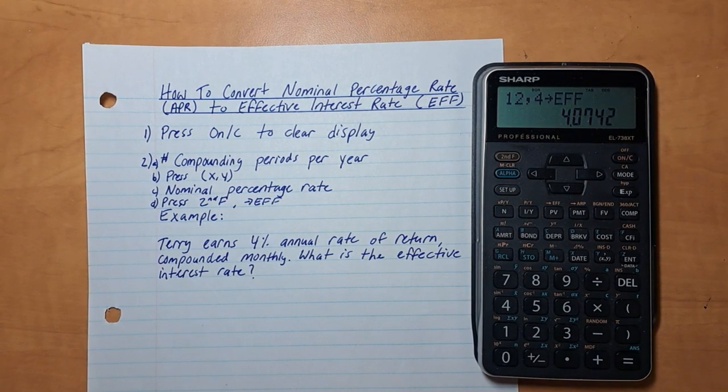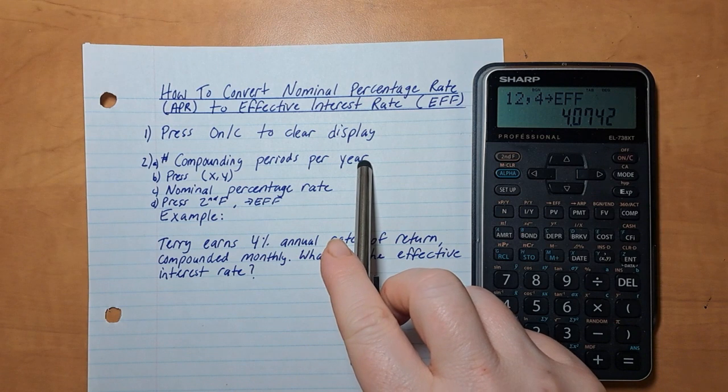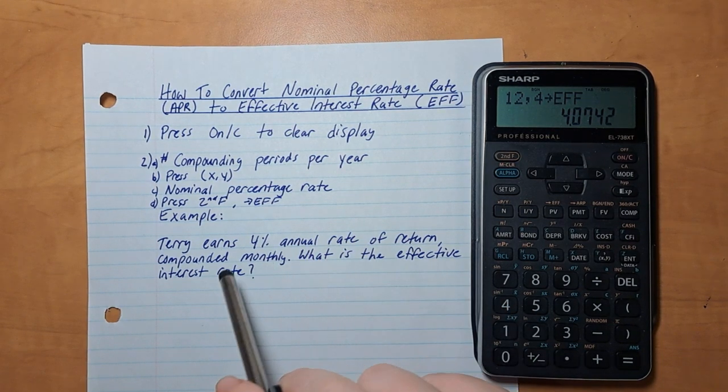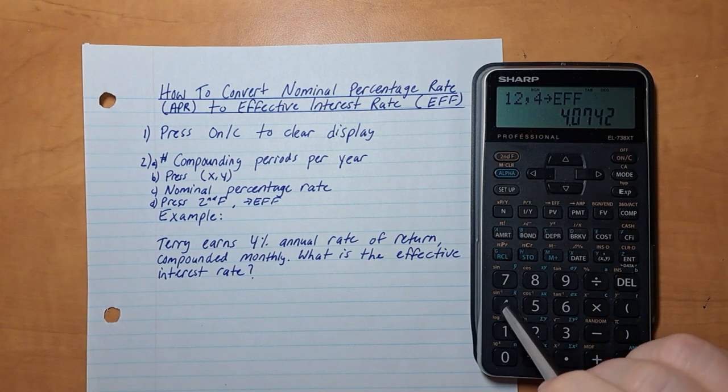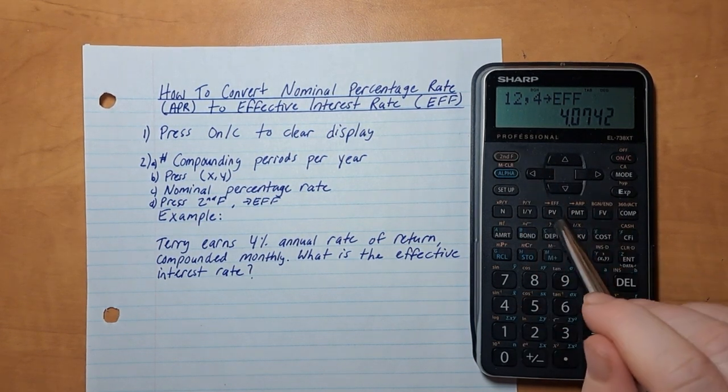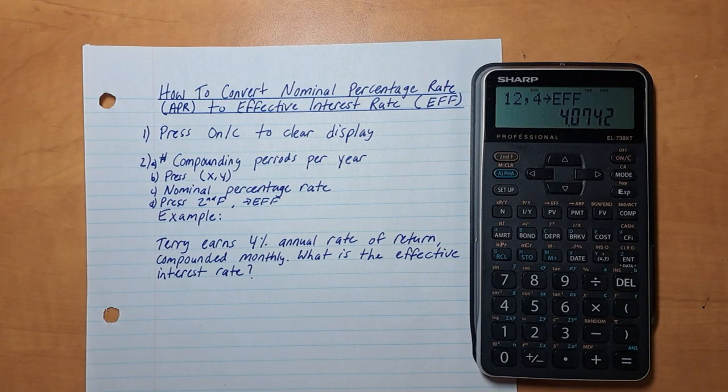So just going over the steps quickly again, it's number of compounding periods for a year, which if it's compounded monthly is 12. You press this XY key, and then you type in your percentage, and then second function, EFF. So there you go.